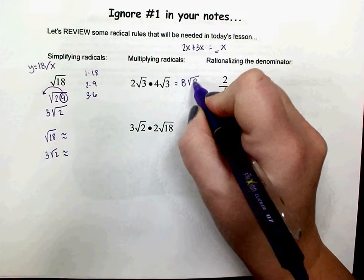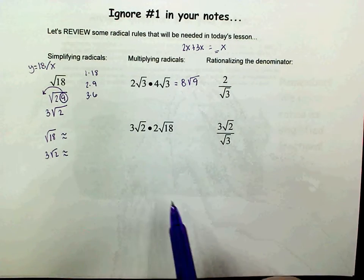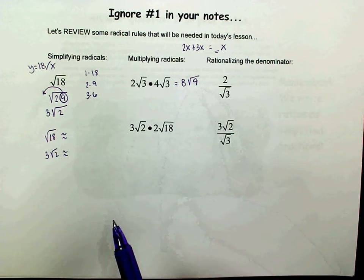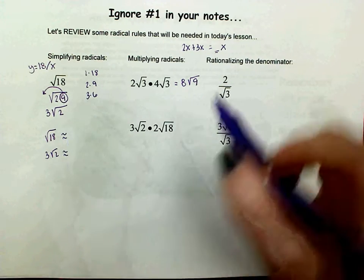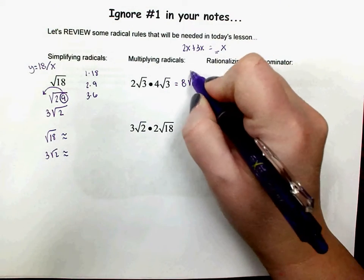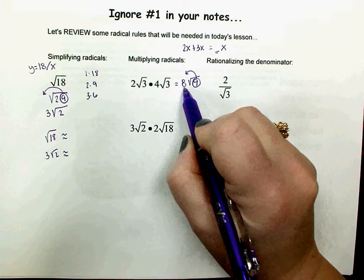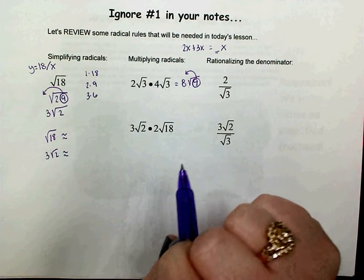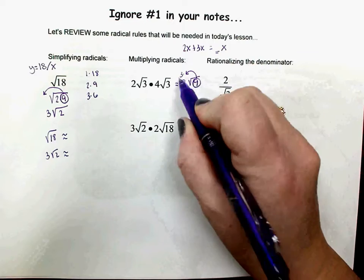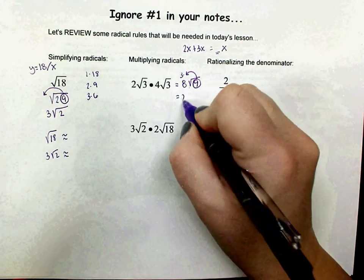3 times 3 is 9. I would never give this as my final answer because it's not simplified. 9 is a perfect square, just like it was over here, so I can take the square root of 9 and it comes out as a 3. When it comes out, this is multiplication since they're written right beside each other, so that 3 has to multiply by the 8 that's already outside, and I would get 24.